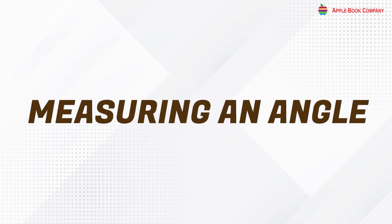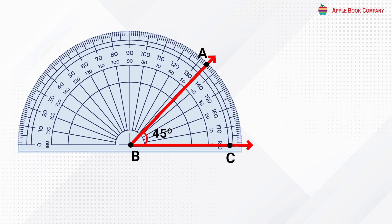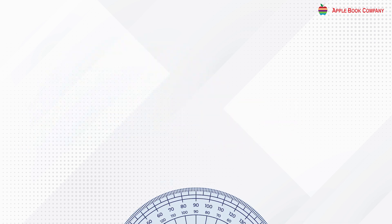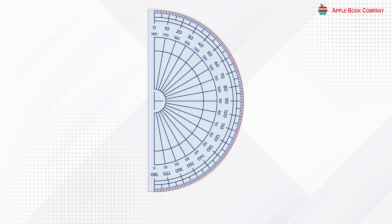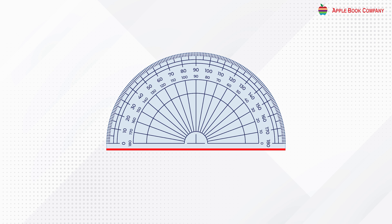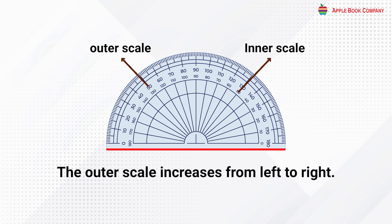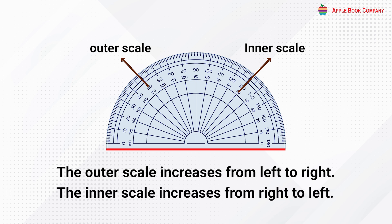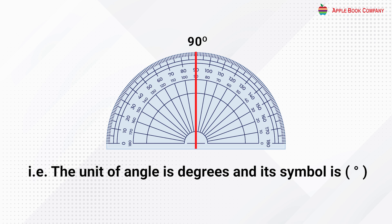Measuring an angle is to know the exact gap between two arms of an angle. It can be measured with the help of an instrument called a protractor. A protractor is an instrument used to measure an angle. It looks like the letter D. It has a horizontal line at the straight edge, and two scales — one inner and one outer — along the curved edge showing 180 degree divisions. The outer scale increases from left to right; the inner scale increases from right to left. The unit of angle is degrees, symbolized as °.